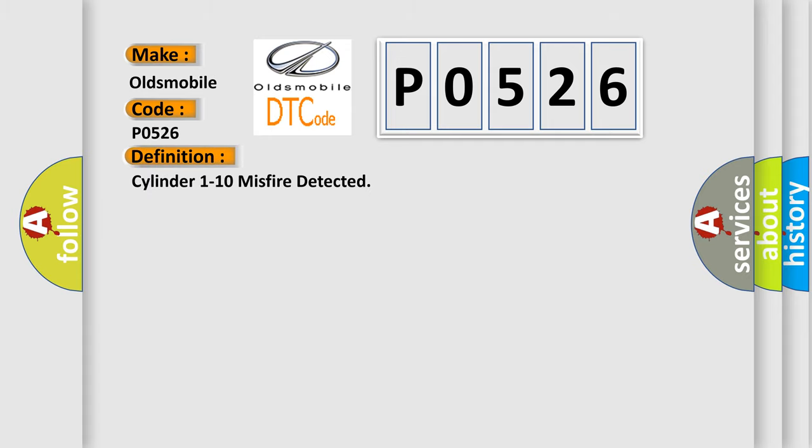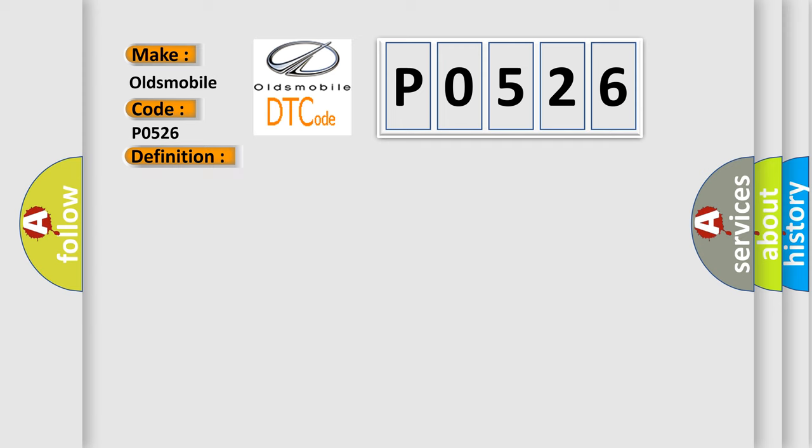The basic definition is Cylinder 1 to 10 misfire detected. And now this is a short description of this DTC code.